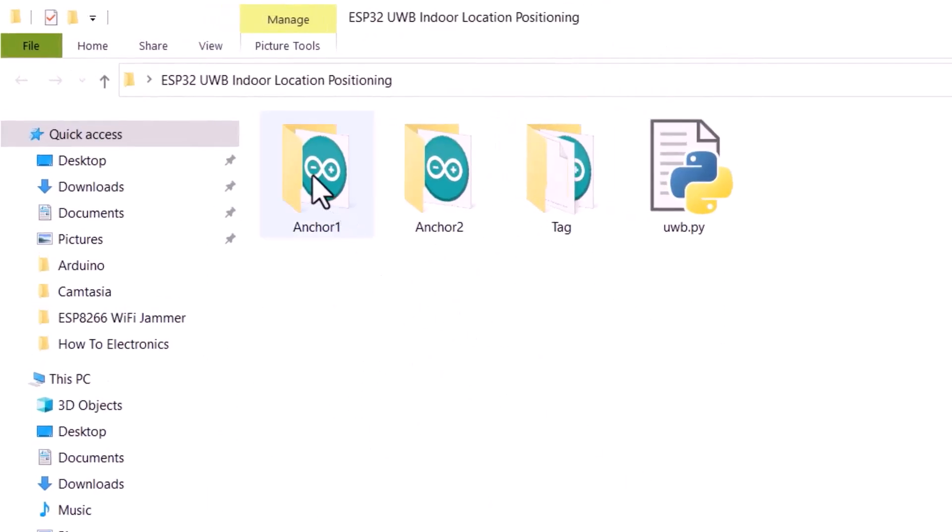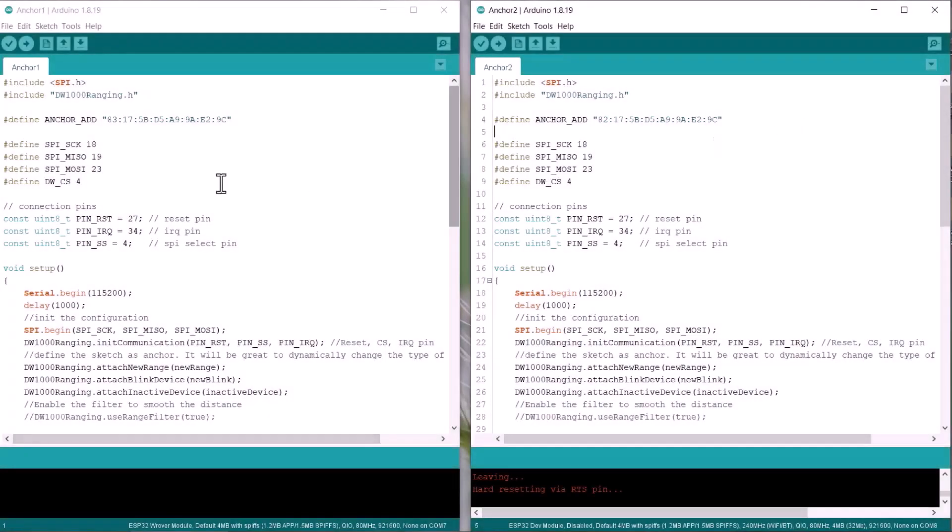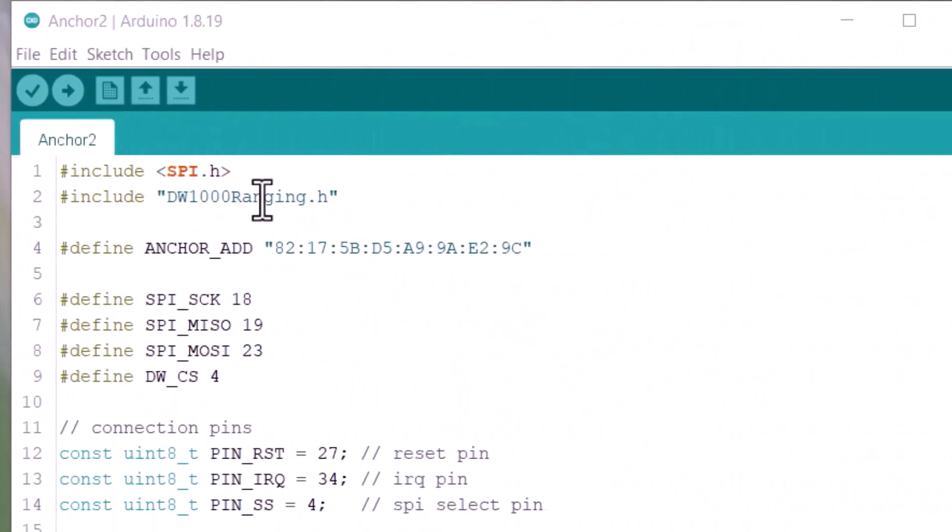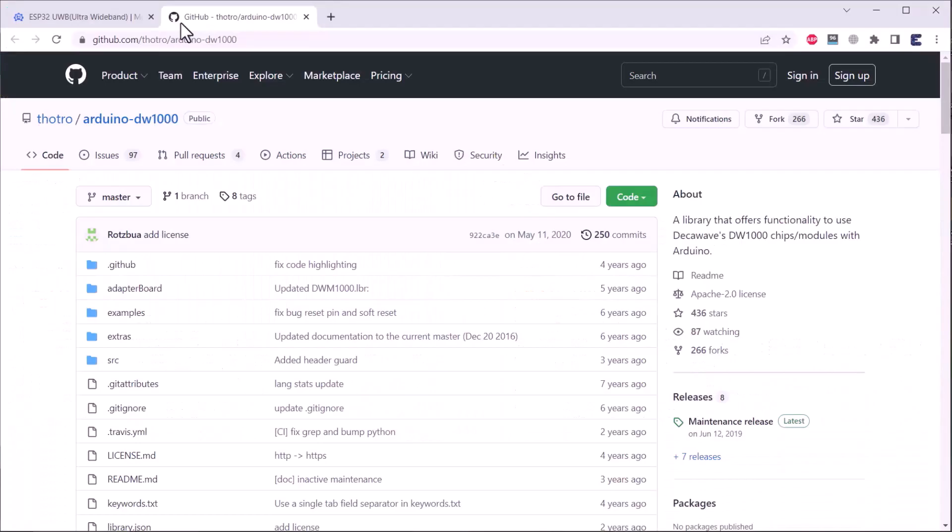Let's move to the coding part. We will need four codes for this project. The anchor code 1 and the anchor code 2 is the same code. We will need a tag code as well, then a Python code for data visualization. Let us first see the pair of anchor codes. In this code, a library for DW1000 is used. So, first we need to install the DW1000 library.